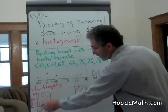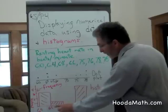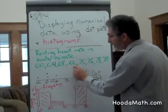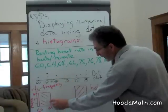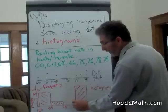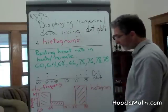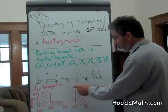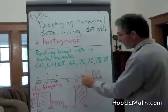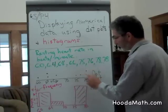You can see there are 3 people with a heart rate between 60 and 64, so the height is 3. Between 65 and 69, there is only one person, so the height of the bin is 1. No people have a heart rate between 70 and 74. But 4 people have a heart rate between 75 and 79.